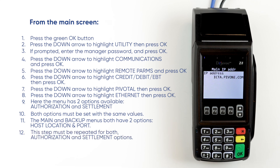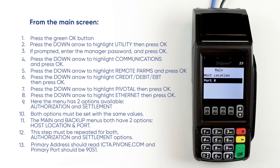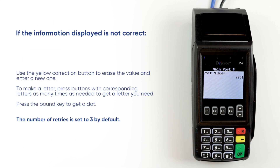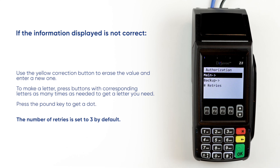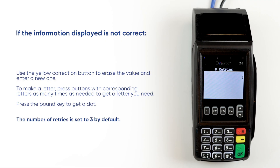This step must be repeated for both Authorization and Settlement options. Primary address should read icta.pivone.com and primary port should be 9051. If the information displayed is not correct, use the yellow correction button to erase the value and enter a new one. To make a letter, press buttons with corresponding letters as many times as needed to get the letter you need. Press the pound key to get a dot. The number of retries is set to 3 by default.